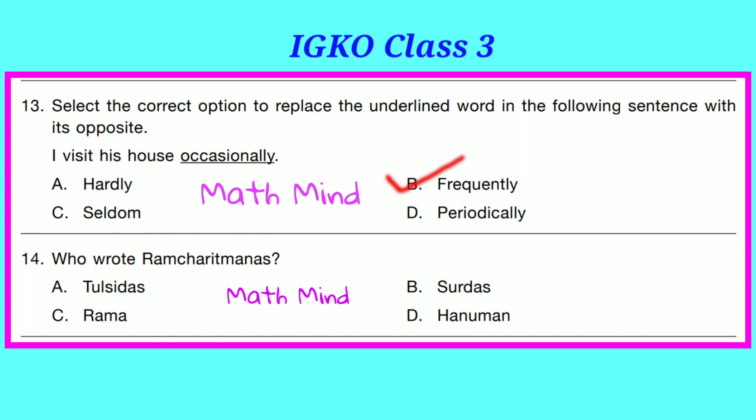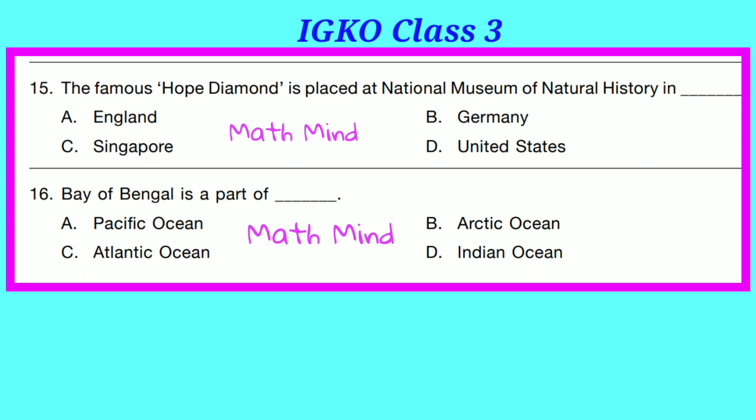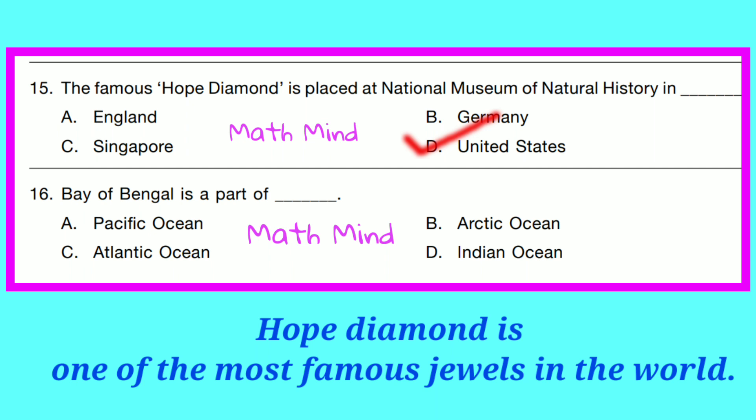Question No. 14. Who wrote Ramacharitha Manas? Option A is correct — Tulsidas. Question No. 15. The famous Hope Diamond is placed at the National Museum of Natural History. The correct answer is D — United States. The Hope Diamond is a sapphire-blue gemstone, one of the most famous jewels in the world and one of the largest blue diamonds. It is believed to have originally been in India.